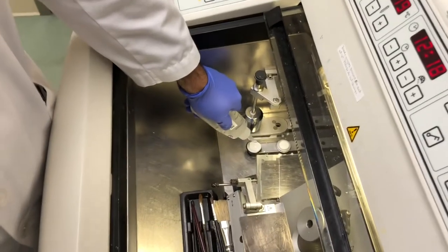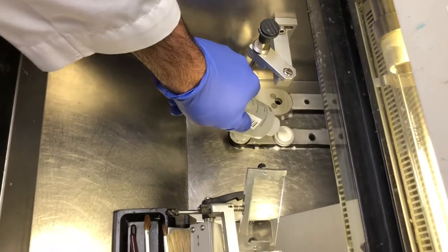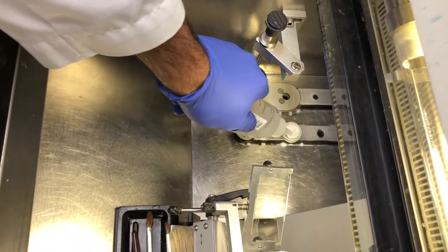Put a layer of the OCT compound onto the chuck. OCT stands for optimal cutting temperature compound. It consists of ethylene glycol and polyvinyl alcohol.